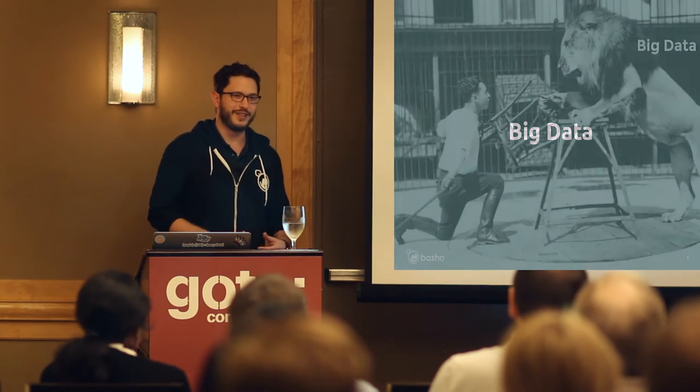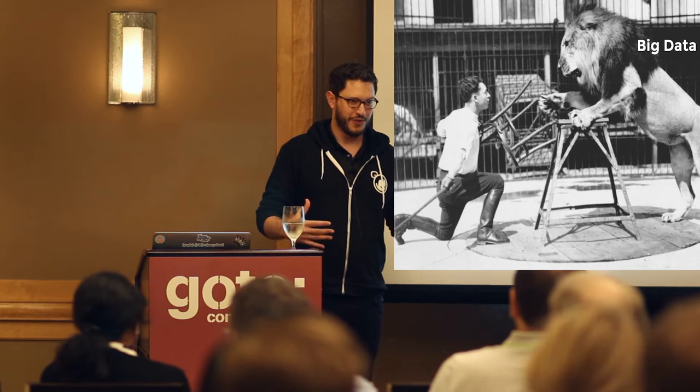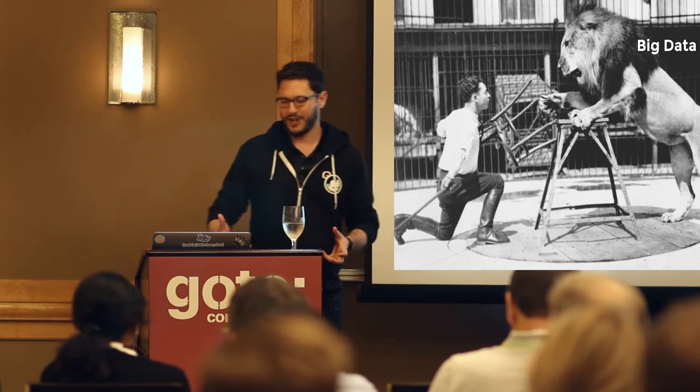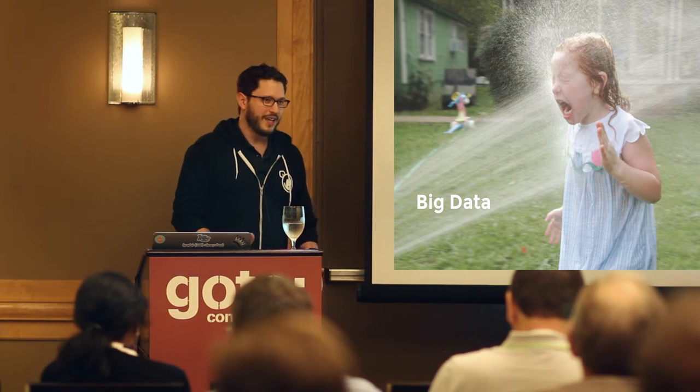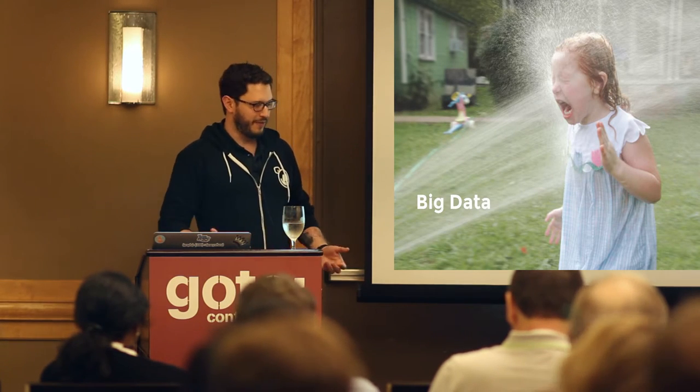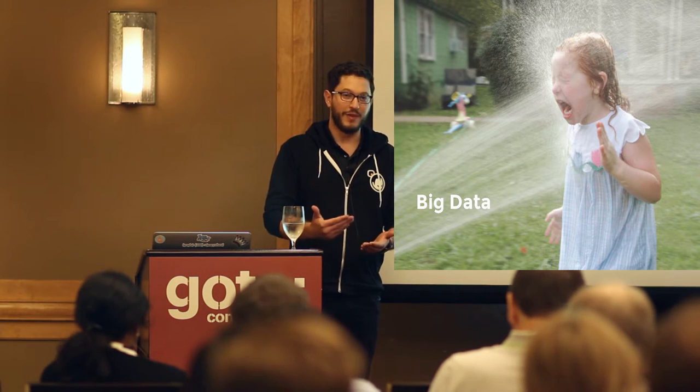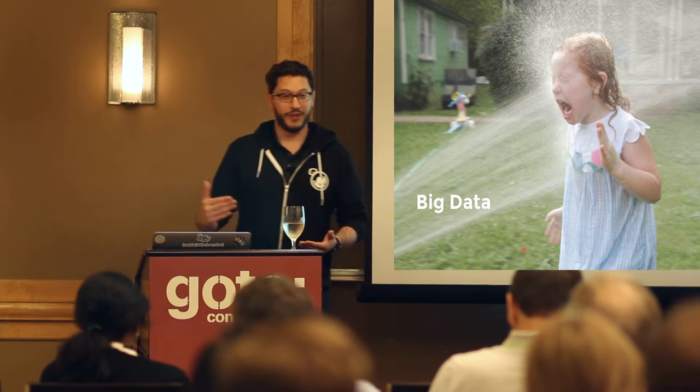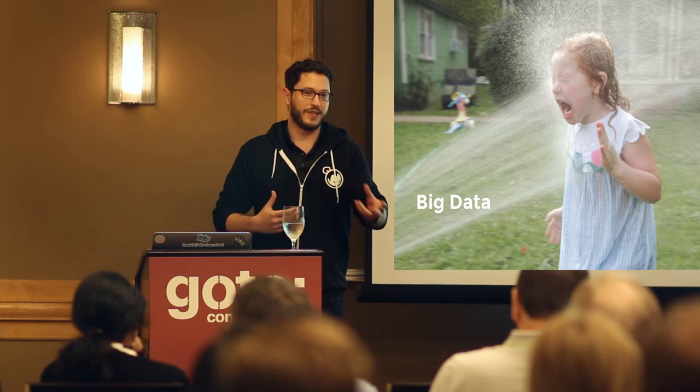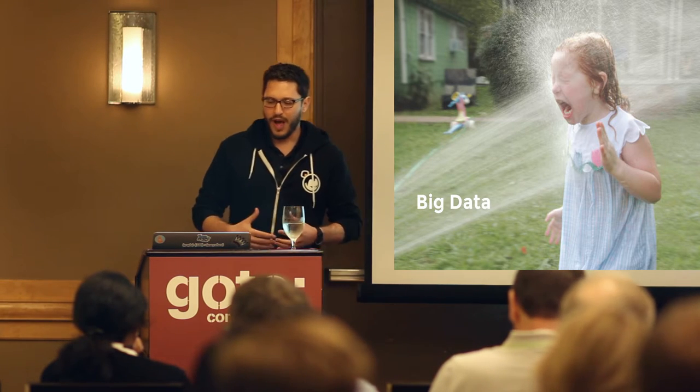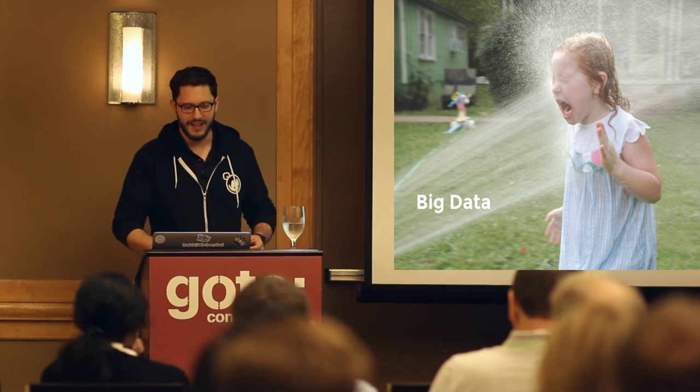So here we are, some mashup of ops and dev, and we get to be lion tamers with all this data coming in through different streams and different architectures, and we're trying to get real information out of it. But anyone that's ever inherited an architecture is familiar that you don't get to start from scratch. You're usually building a prototype, and that prototype's on something that's very fragile if it actually achieves the scale that you're attempting to achieve.